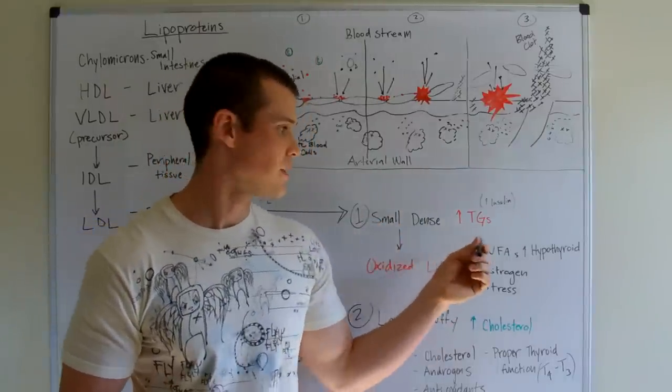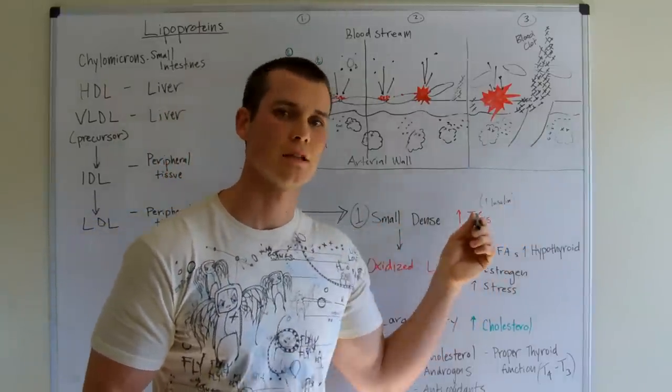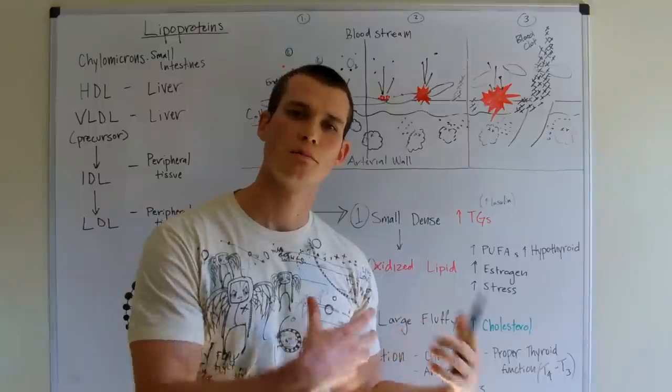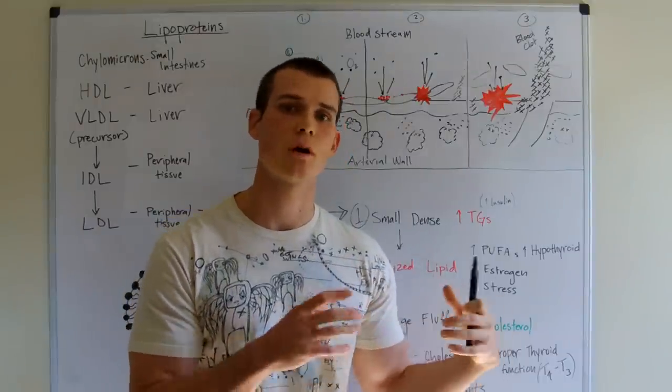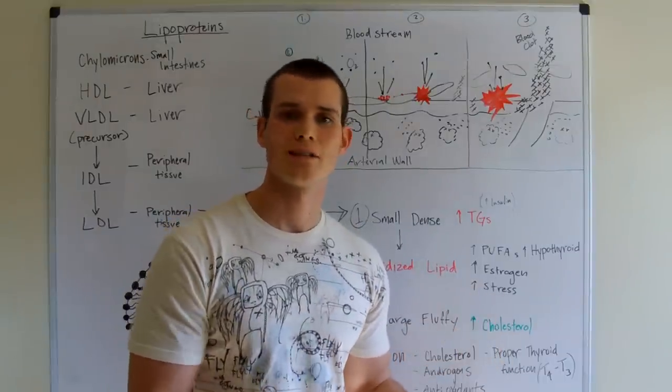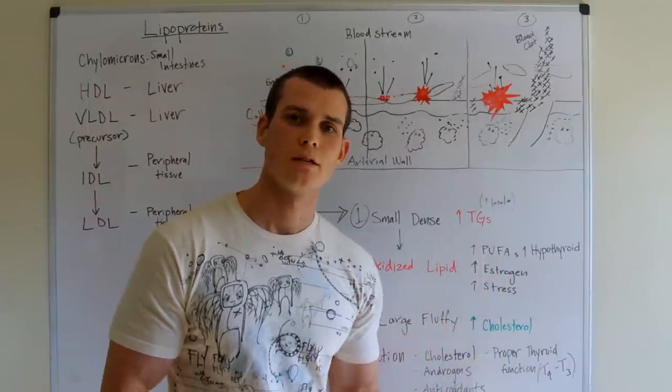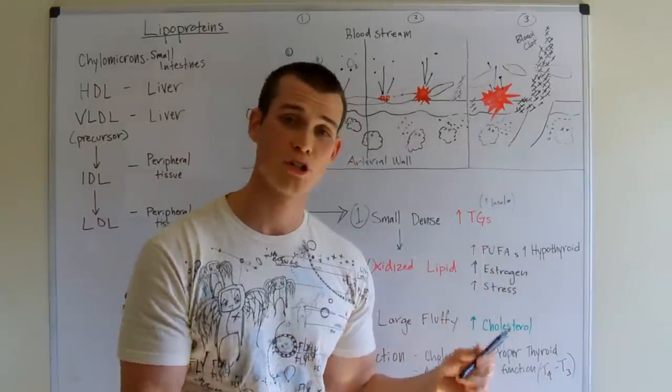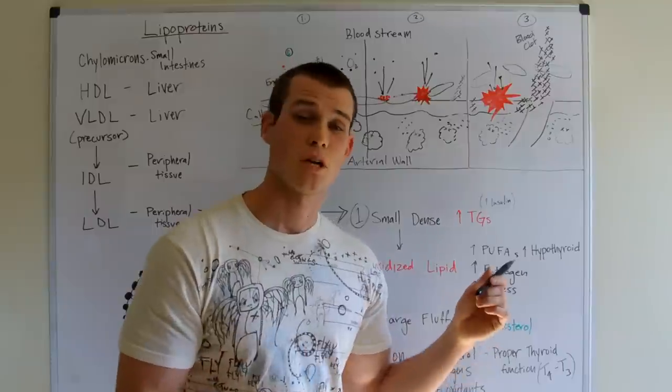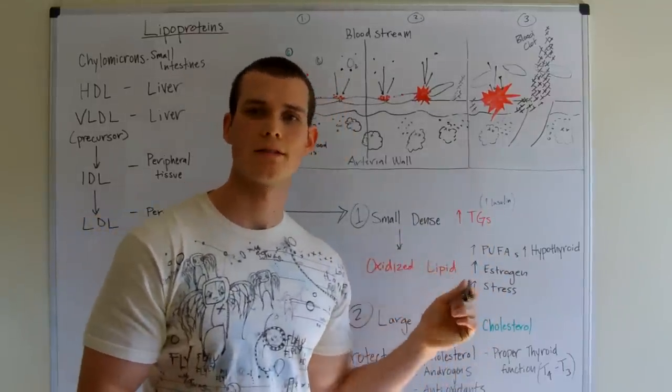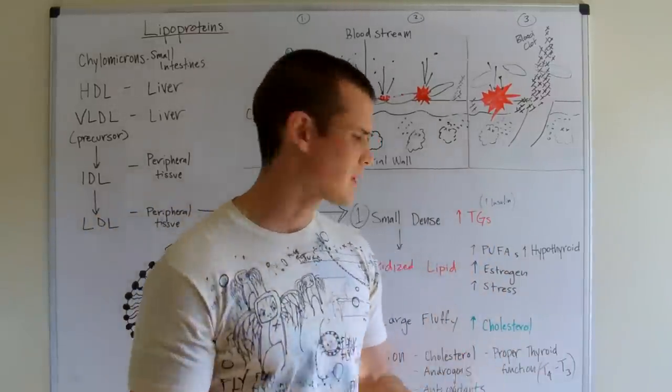Triglycerides or small dense ones are going to be derived because of insulin. So these are going to be carbohydrate induced. If we're not balancing the blood sugar, if we're not eating the right ratios of proteins, carbs and fats, if we're insulin resistant, you're going to see a lot of triglycerides in diabetics. If your alcohol consumption is too high, maybe if your stress levels are too high, we're going to see a lot of triglycerides and you're going to have a lot of small dense lipoproteins. And that's not something that we want.